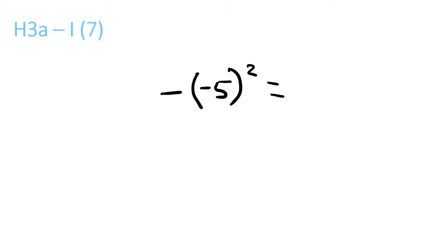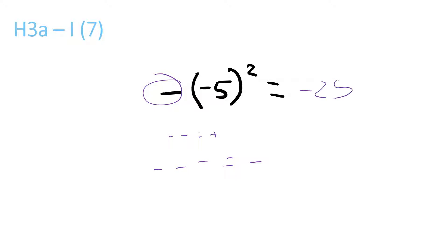So this one — minus 5 with the 2. You close brackets first, so minus and a minus equals a plus, so it's plus 5 times 2, which is 25. But you still got this minus, so 3 minuses equals a minus — so minus 25.